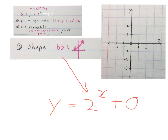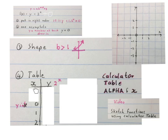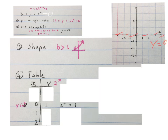We remind ourselves what the shape looks like: because the base is bigger than 1, the graph will be going up from left to right. Now we set up our table with x values and y values. We always start in the middle of our table with 0, 1, and 2, bringing in new numbers as needed. We substitute 0 into the equation: 2 to the power of 0 is 1. Your first coordinate is (0, 1) and you plot it. This table can also be found on your calculator using the function table and alpha button.